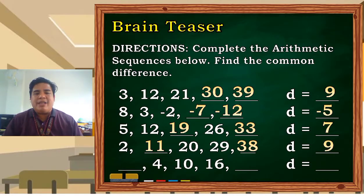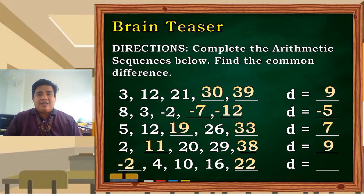And the last one: blank, 4, 10, 16, and blank. First blank is negative 2, and the last blank is 22. So what is our common difference here? We have 6. So those are kinds of arithmetic sequences. As you can see, there is only one common difference for every sequence. Only one number is the gap between each term in that sequence.